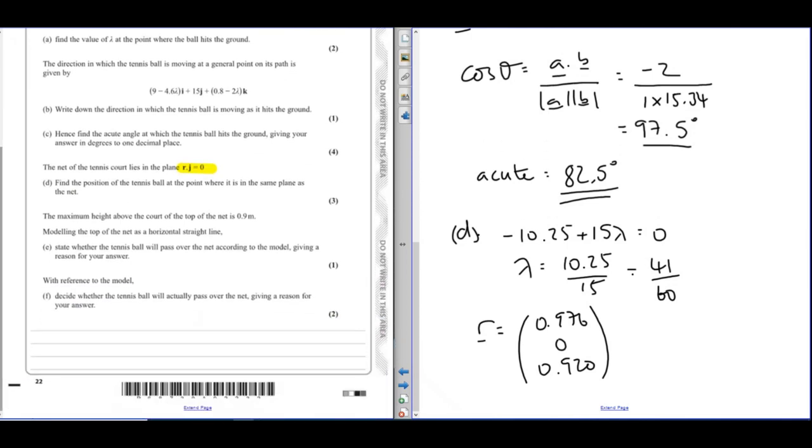It then says the maximum height above the ground at the top of the net is 0.9. The model assumes the top of the net is a horizontal straight line. State whether the tennis ball will pass over the net according to the model. So what we need to find here is the height of this ball, which is essentially your k component. So your k component is 0.92.